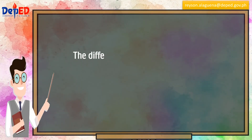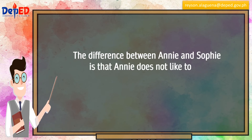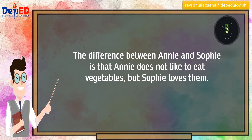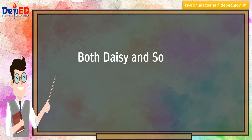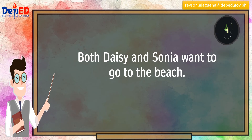The difference between Annie and Sophie is that Annie does not like to eat vegetables, but Sophie loves them. This is D, or different. Both Daisy and Sonia want to go to the beach. This is A, or alike.